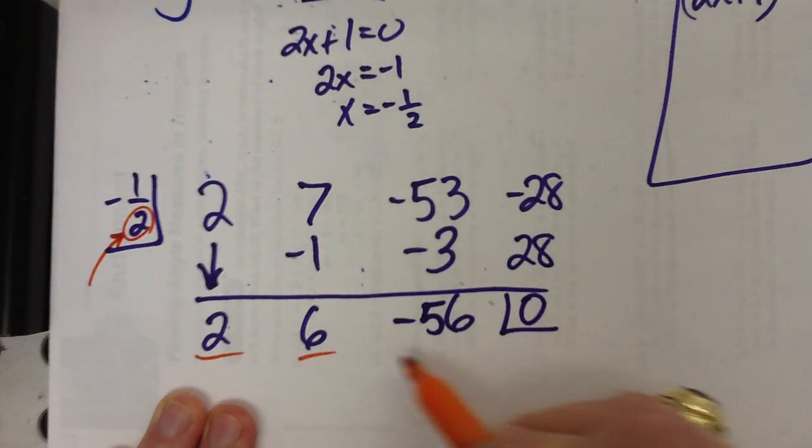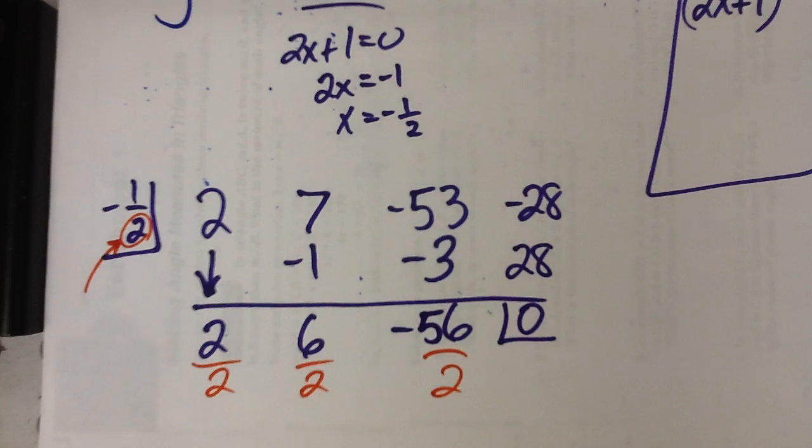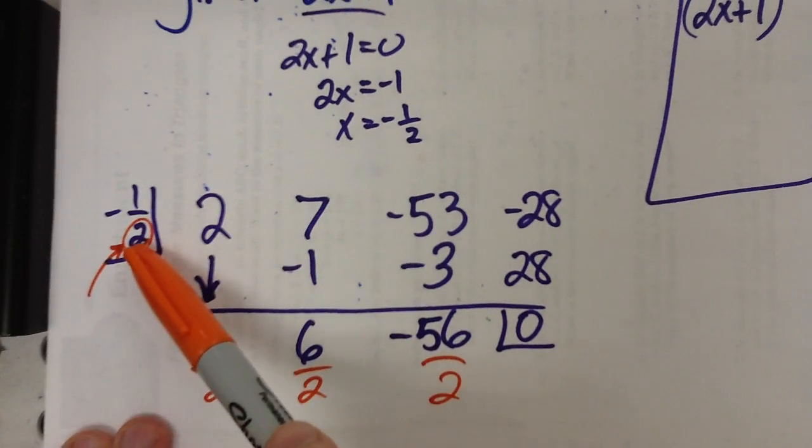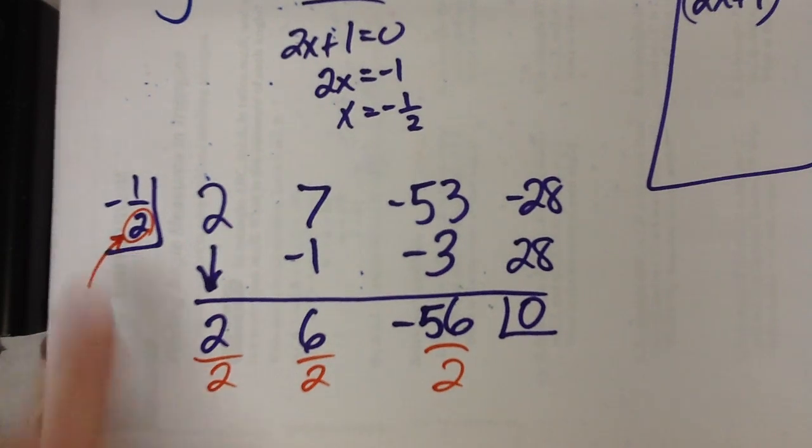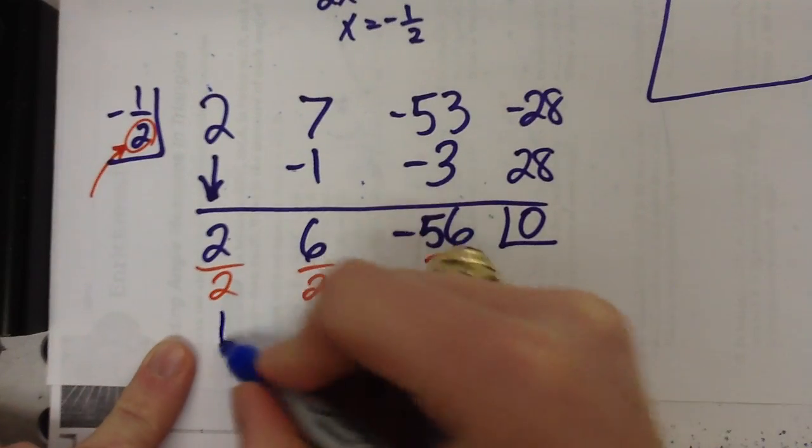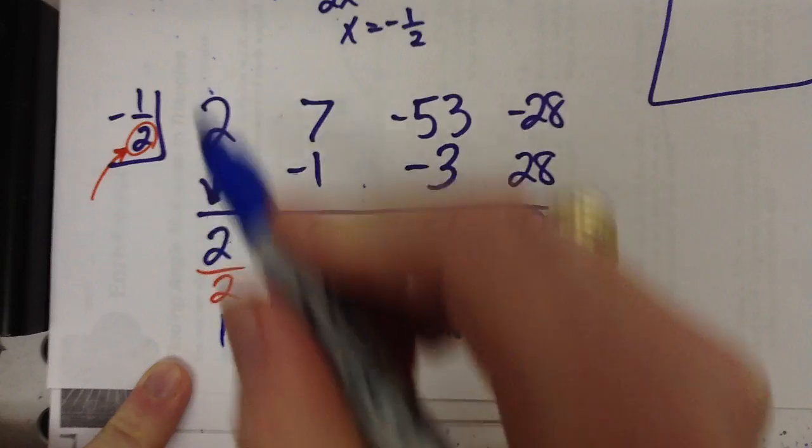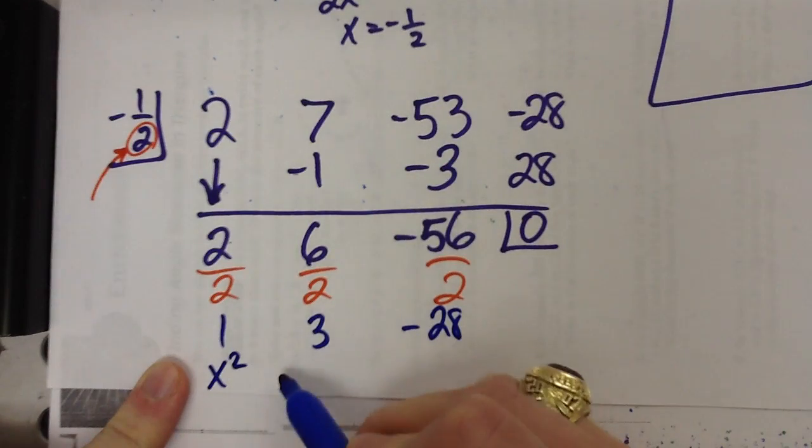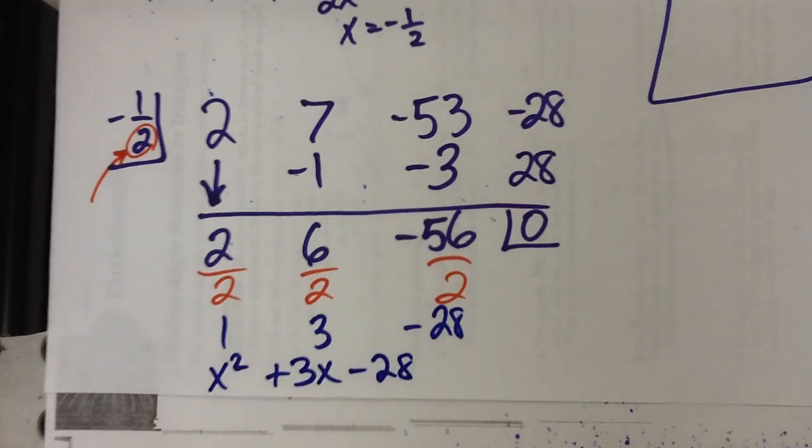Anytime you have a divide by a fraction, you do have to divide by that bottom number. So we get 1, 3, and negative 28. We started with x cubed, so this is 1x squared plus 3x minus 28.